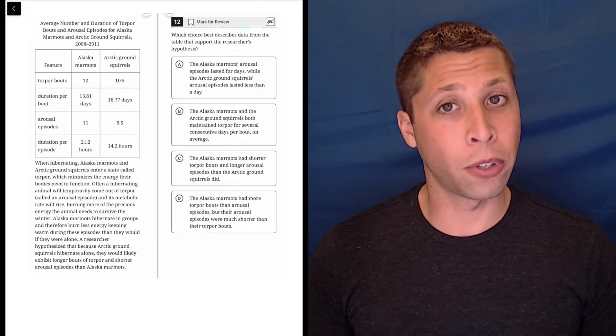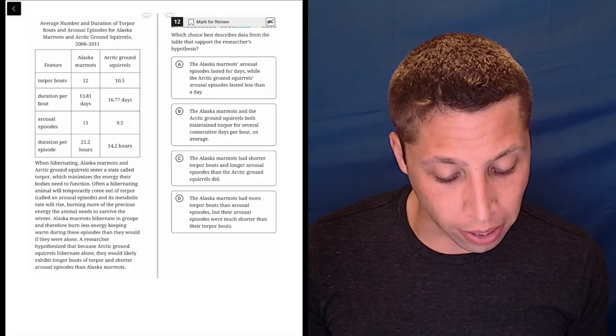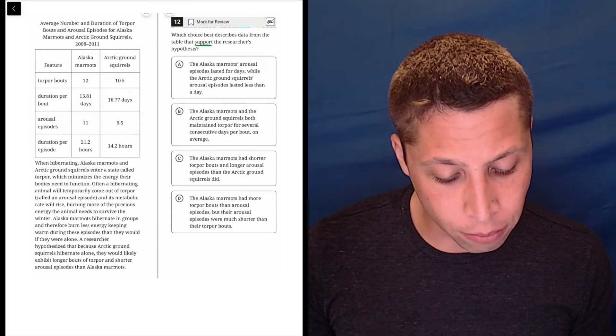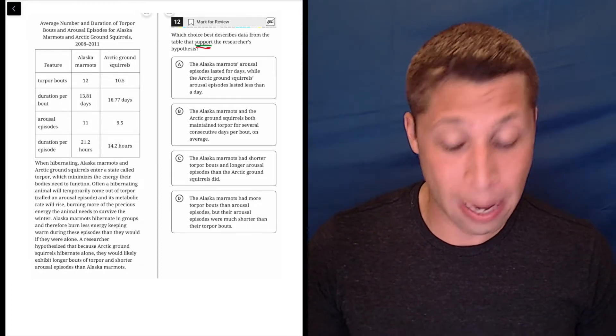So another graph question means I'm going to first think about the accuracy of the choices before I start to think about how they're relevant. They do need to support the researcher's hypothesis, but I would really like to see if they are actually supported by the table before I pick them.